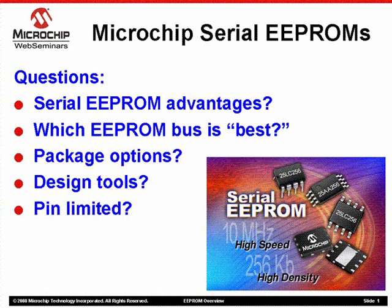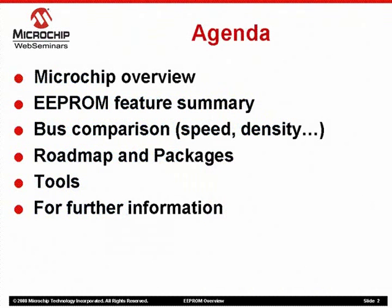Now, let's look at our agenda. We'll start off with a brief overview of Microchip's history of providing Serial EEPROM products. Then we'll look at some specific features common to all Serial EEPROMs. Then we'll compare and contrast three Serial bus options: I2C, Microwire, and SPI. And I will introduce a fourth option, Microchip's new UNIO family of single-IO EEPROMs. After that, we'll check out our product roadmap and packaging options. Finally, we'll look at a couple of tools and close with some ways you can get more information.